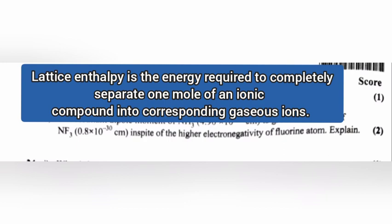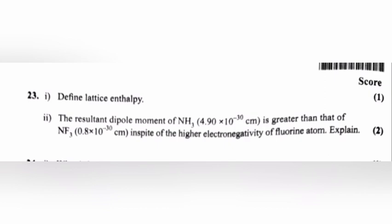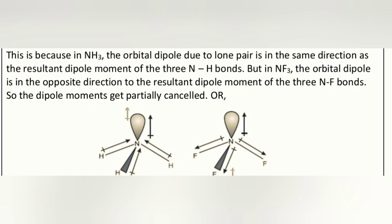Question 23.2: The resultant dipole moment of NH3 is greater than that of NF3 in spite of the higher electronegativity of fluorine atom. Explain. Answer: This is because in NH3, the orbital dipole due to the lone pair is in the same direction as the resultant dipole moment of the three N-H bonds. But in NF3, the orbital dipole is in the opposite direction of the resultant dipole moment of the three N-F bonds. So the dipole moments get partially cancelled.